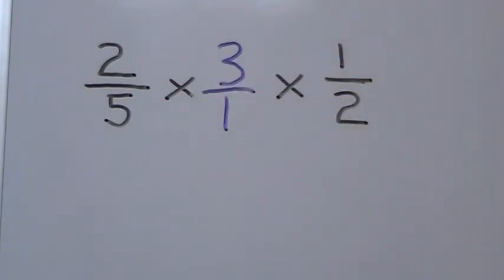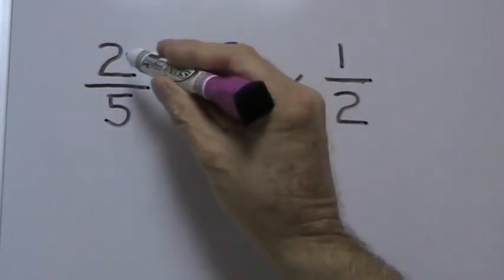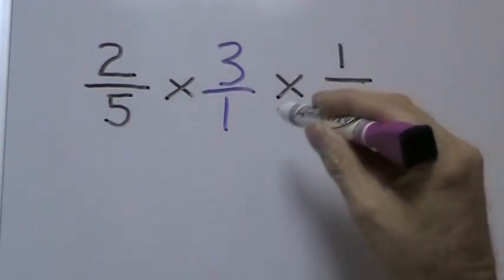Now we're ready to multiply across. We start with our numerators, 2 times 3 gives us 6, times 1 gives us 6.